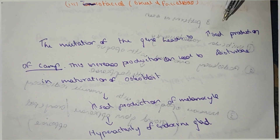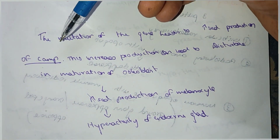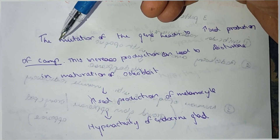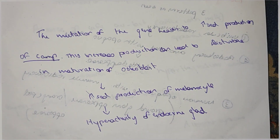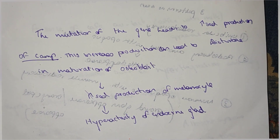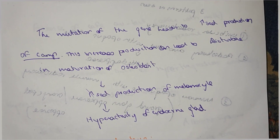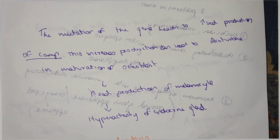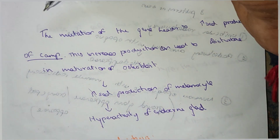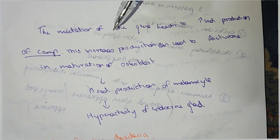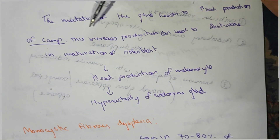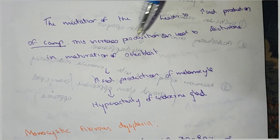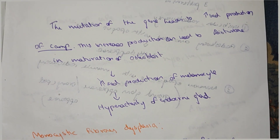The mutation of the gene leads to increased production of cyclic AMP. When the cyclic AMP level increases due to the gene mutation, the enzyme activity is affected.